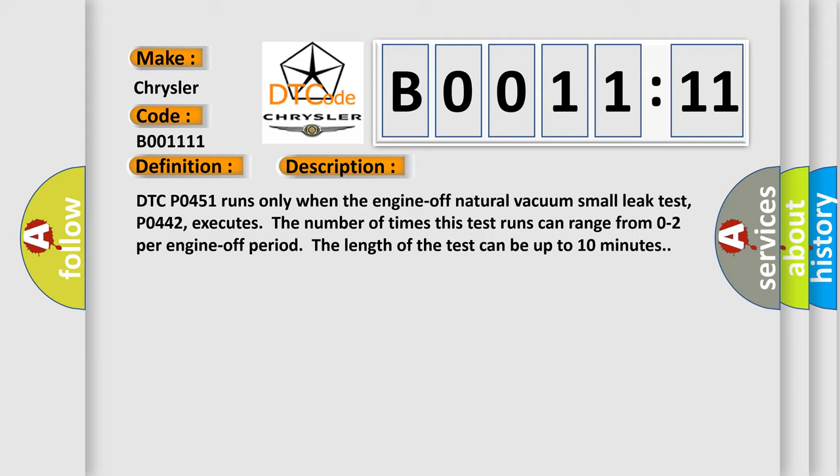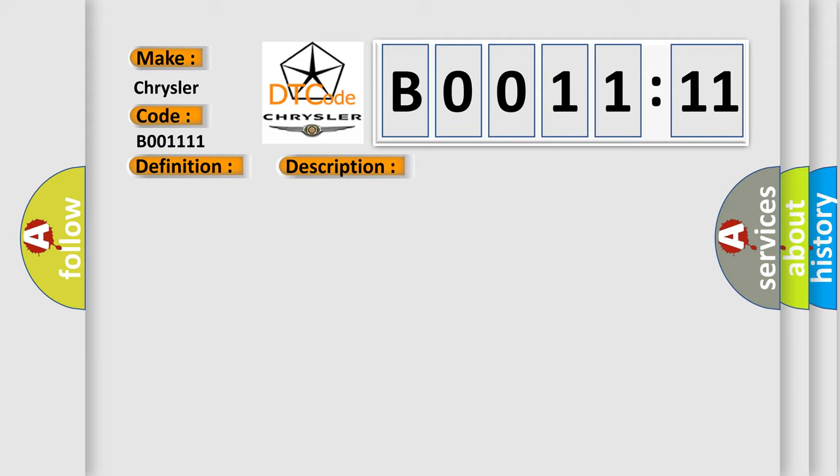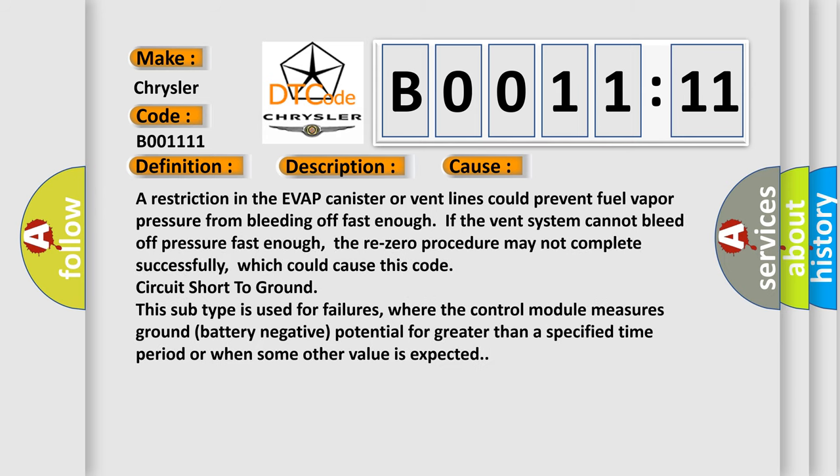This diagnostic error occurs most often in these cases. A restriction in the EVAP canister or vent lines could prevent fuel vapor pressure from bleeding off fast enough. If the vent system cannot bleed off pressure fast enough, the re-zero procedure may not complete successfully, which could cause this code. Circuit short to ground: this subtype is used for failures where the control module measures ground battery negative potential for greater than a specified time period, or when some other value is expected.